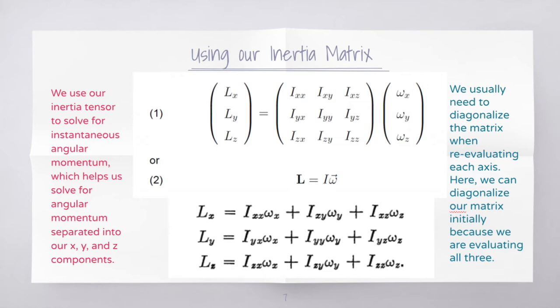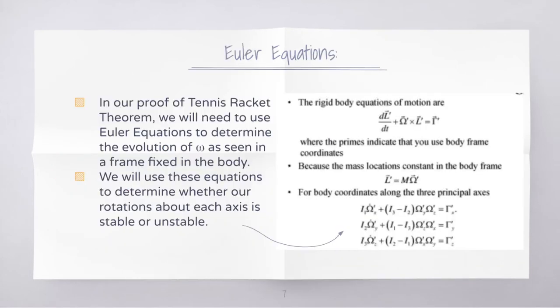According to the text, since we found the principal axes of the body with the corresponding principal moments, there is no need to evaluate the inertia tensor with respect to the other axes. We then know that with respect to the principal axes, our inertia tensor is going to be diagonalized. Using our diagonalized matrix, we can then derive Euler equations that help us prove Tennis Racket Theorem. We'll use our Euler equations to determine the evolution of angular velocity as seen in the frame fixed in the rigid body, and use these equations to determine whether our rotations about each axis are stable or unstable.